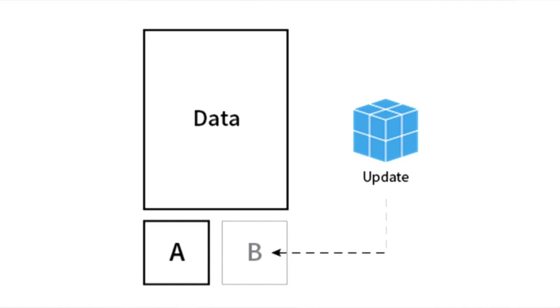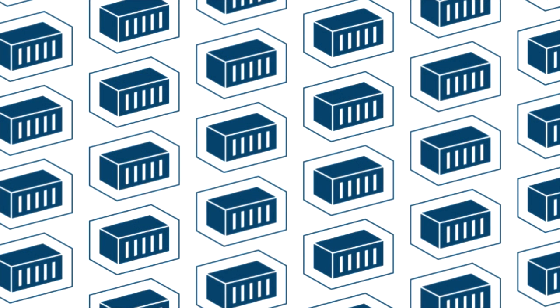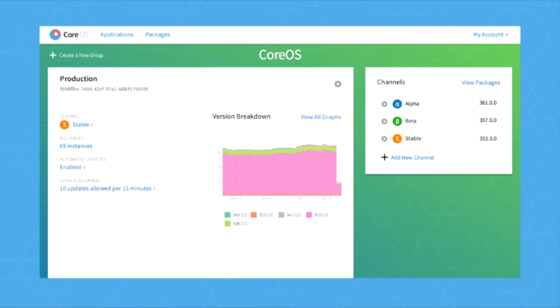This is demonstrating how an update can be atomically applied to a server. You see the data partition, the A and B root partitions, the update package that gets applied to the B partition, and we pivot from A to B on reboot. This works at the scale of one very easily. But if you're running at scale — imagine a thousand servers — you need the tools to actually manage these upgrades and have them applied safely.